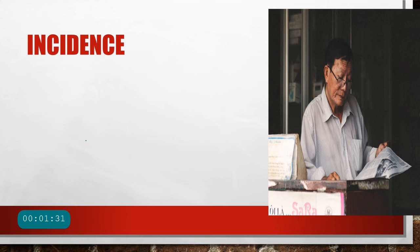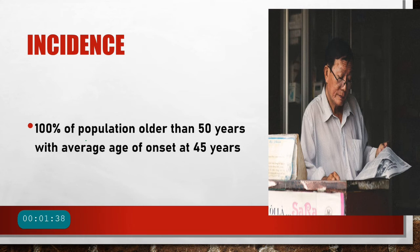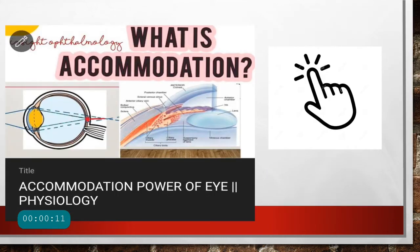What is the incidence of presbyopia? About 100% of the population older than 50 years, with an average age of onset of 45 years. So almost the entire population develops presbyopia, and it usually starts at the age of 40 to 45 years.